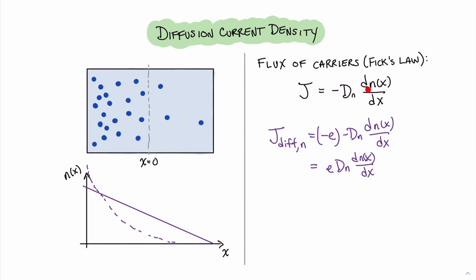Since the hole has a positive charge, the substitution is much more simple. The diffusion current for the hole is equal to minus e D sub p dp of x dx.